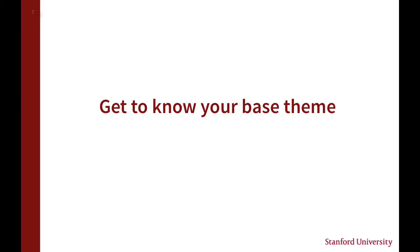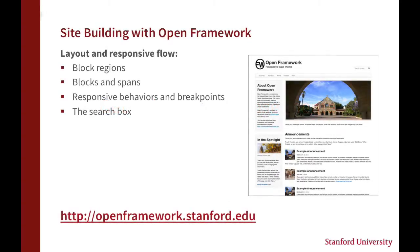The first thing we need to do in order to build a website using our themes is get to know our base theme, because that provides all the default styles we can build on in our sub themes. This is Open Framework. There are a few things we need to know to use it to its fullest: the special block regions, tactics for using blocks and spans, the responsive behaviors and breakpoints, and one little thing with the layout — the search box.